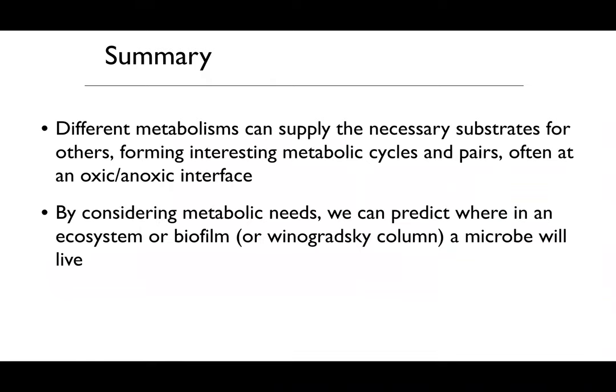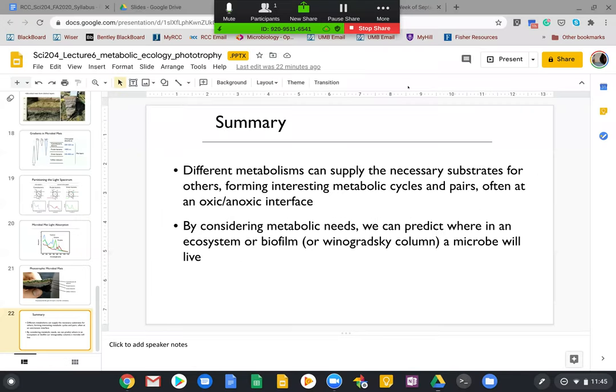In summary, different metabolisms can supply the necessary substrates for others, forming interesting metabolic cycles and pairings, often at the anoxic-oxic interface. By considering metabolic needs, we can predict where in an ecosystem, biofilm, or Winogradsky column a microbe will live. That's the end of today's lecture — if you have any questions please let me know, otherwise take care.